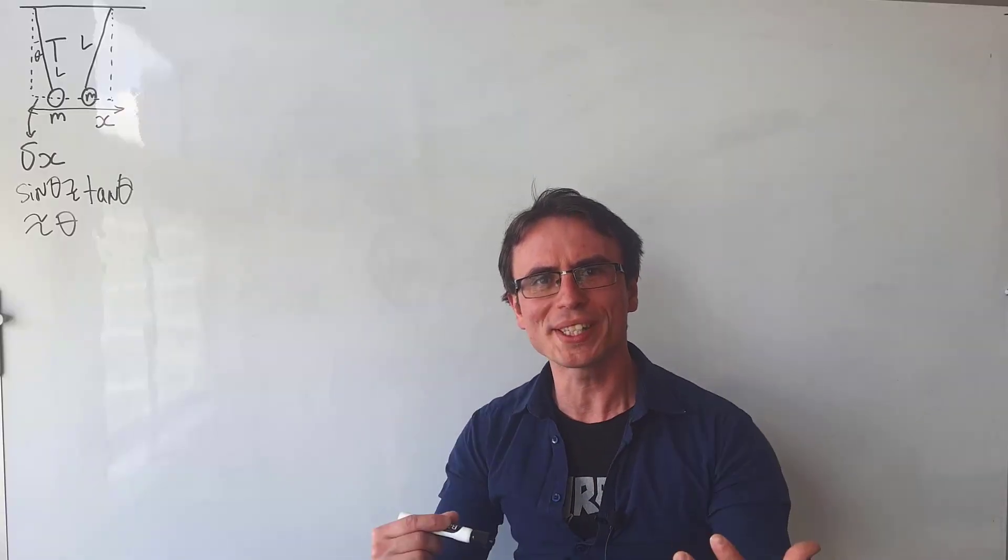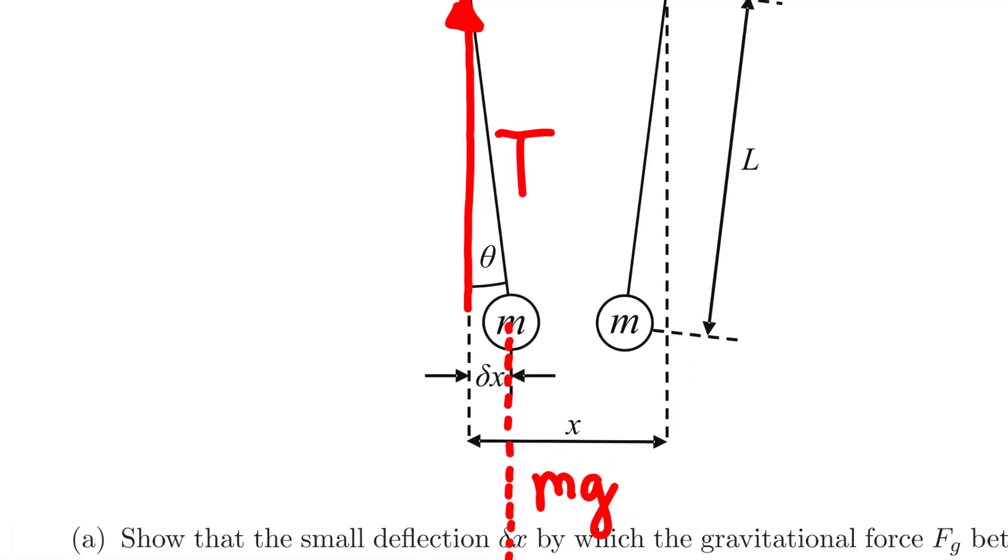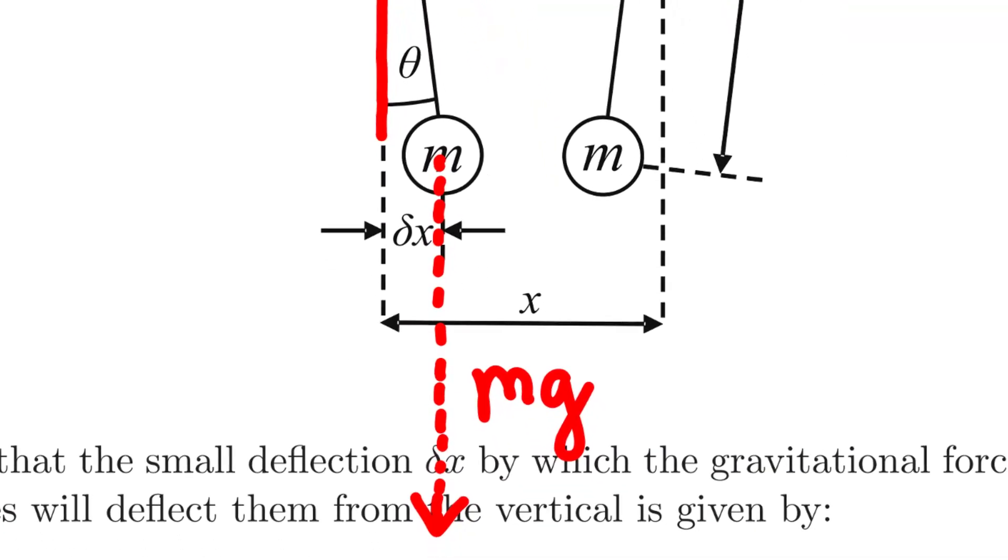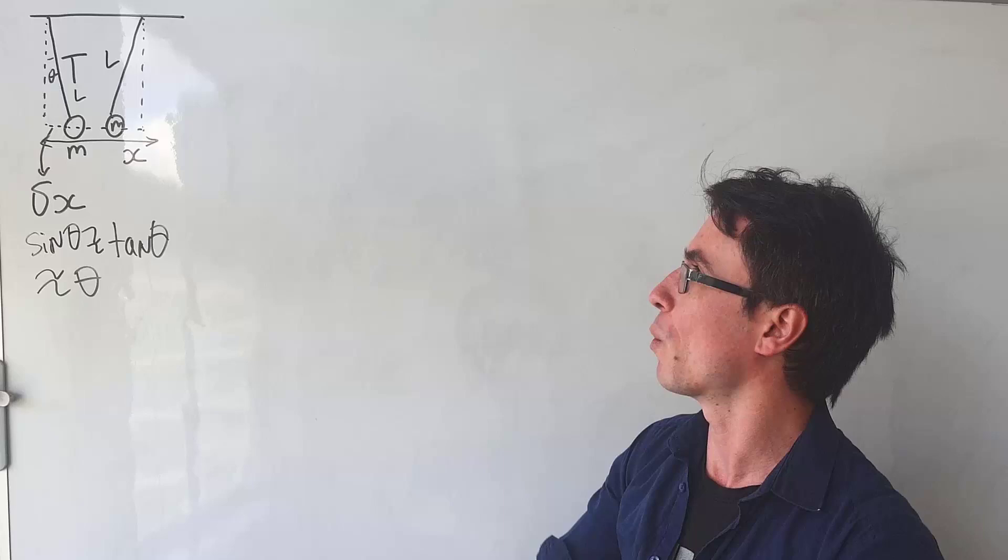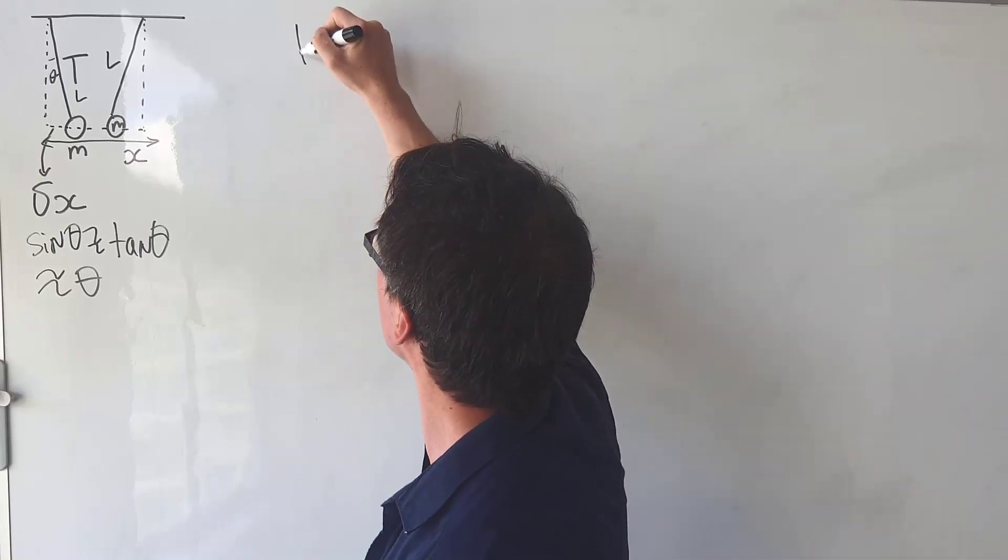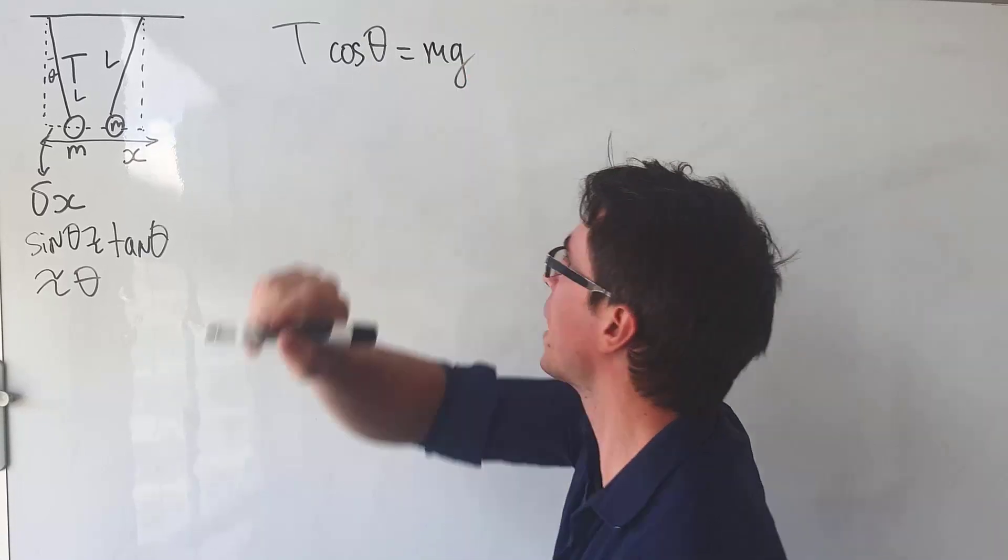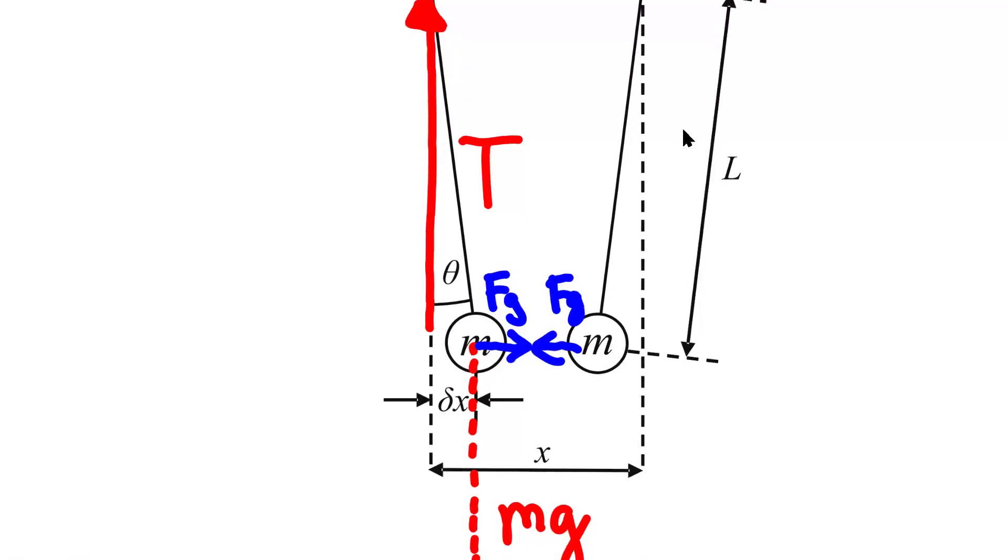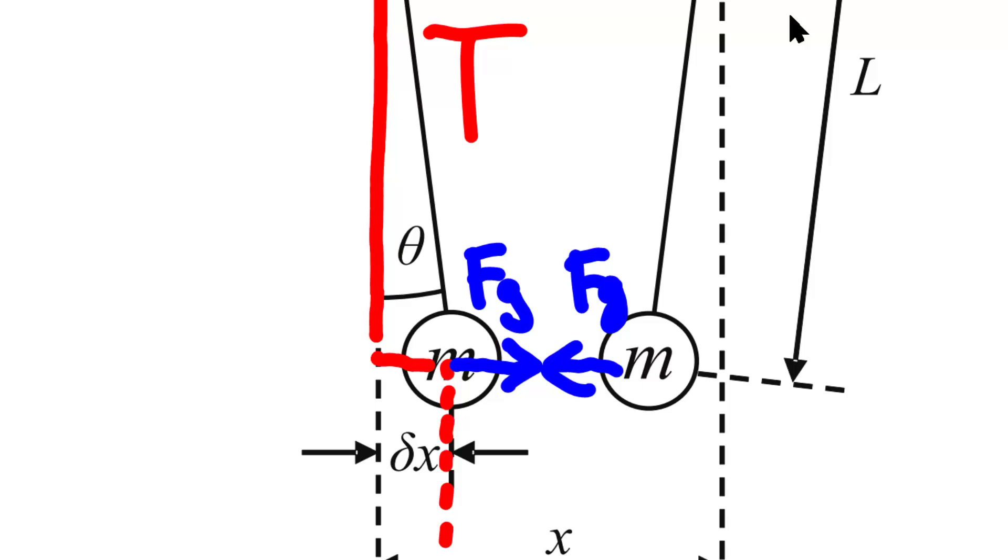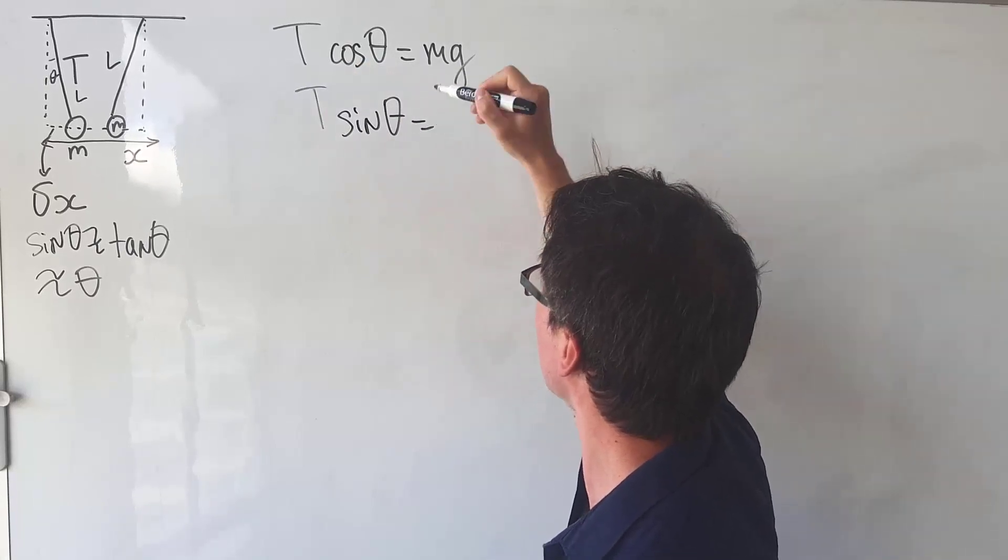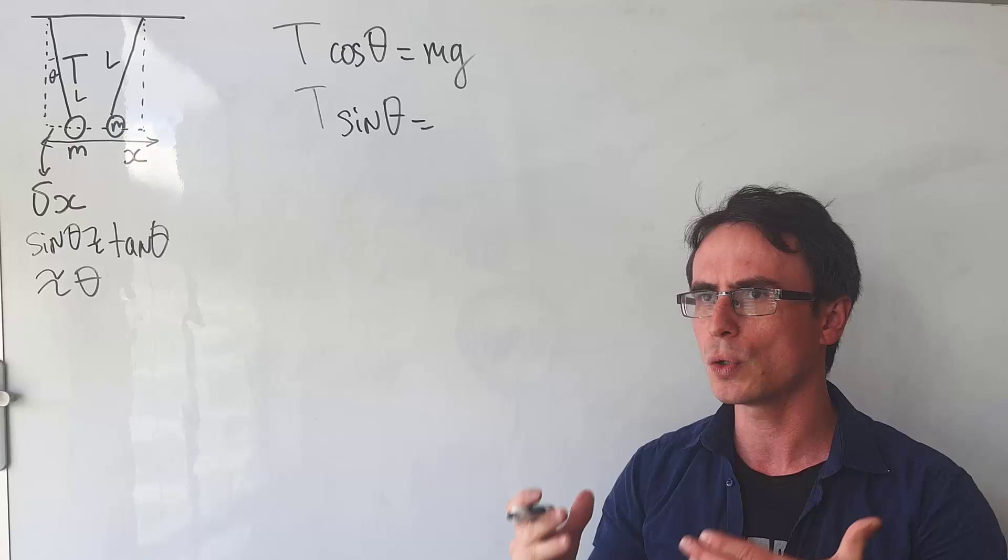So starting from the basics, let's resolve the tension. The vertical component of the tension will be balancing out the weight. So we can write down that T cos theta will be equal to mg. The horizontal component will be the gravitational force that is causing this deflection. So we can say that T sine theta will be equal to the gravitational force.